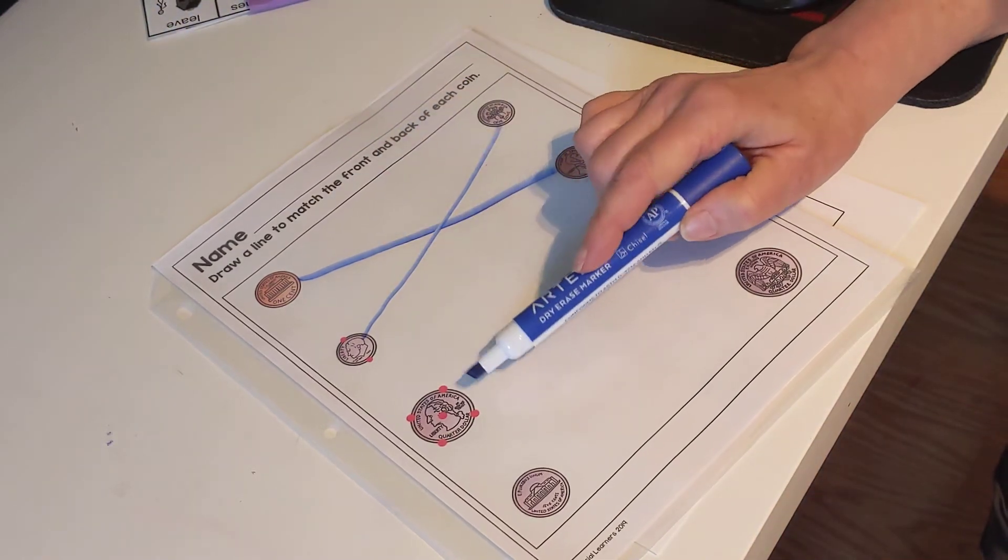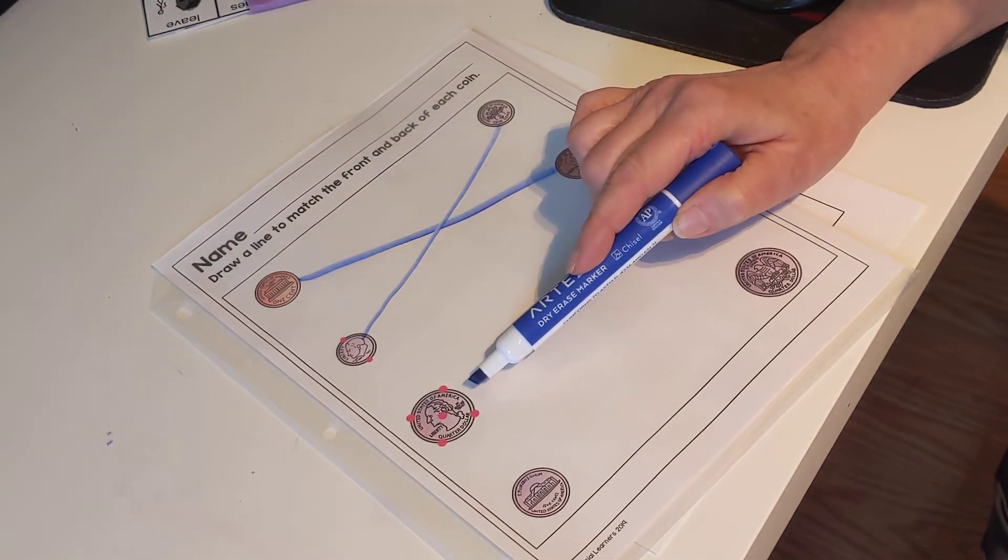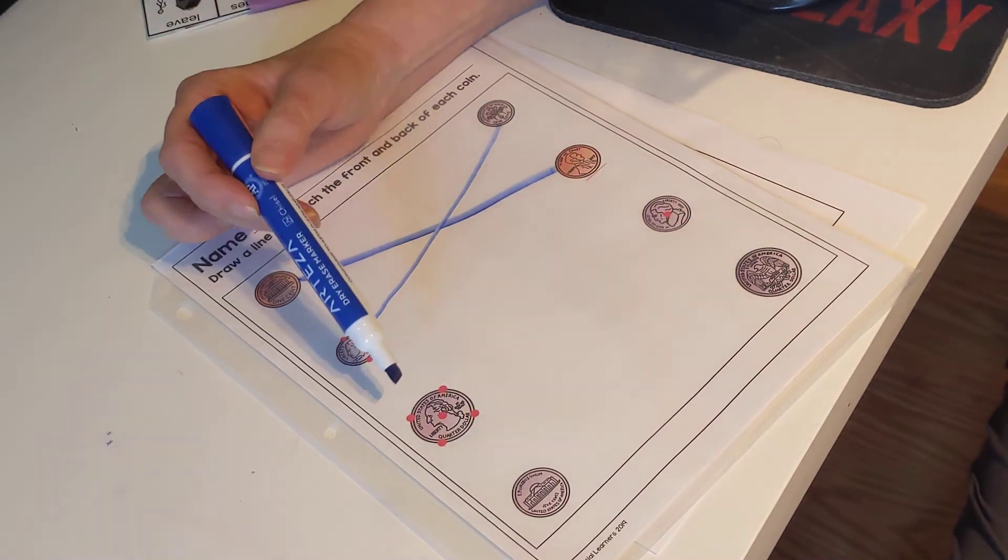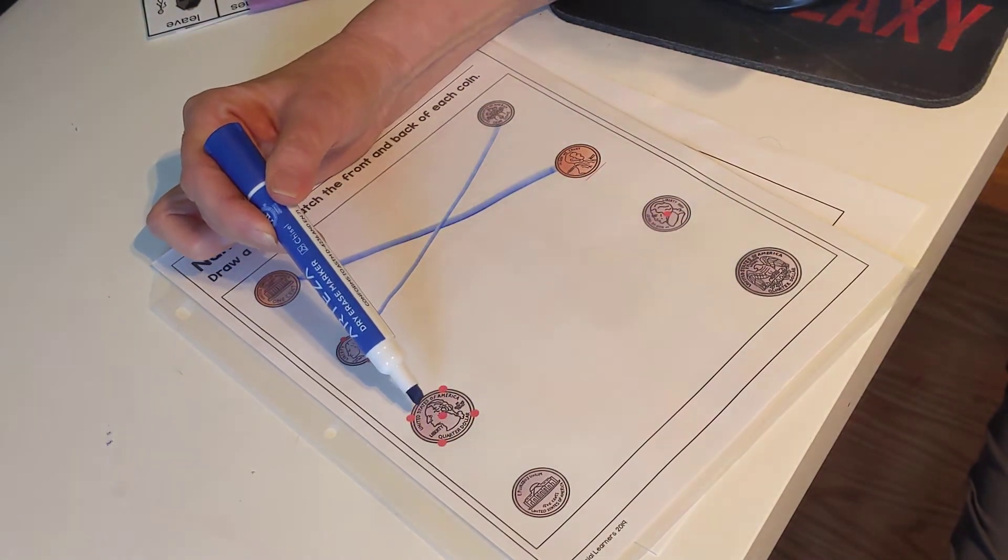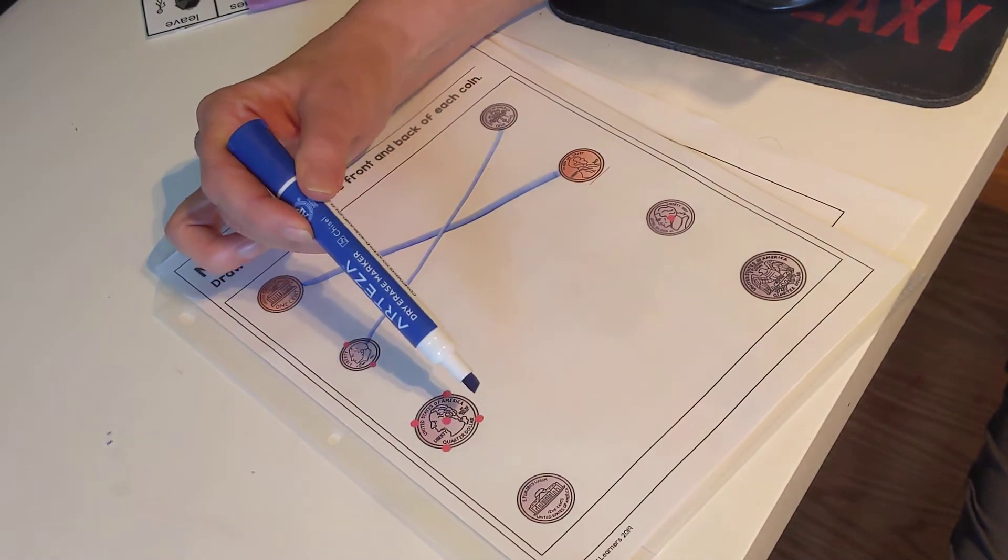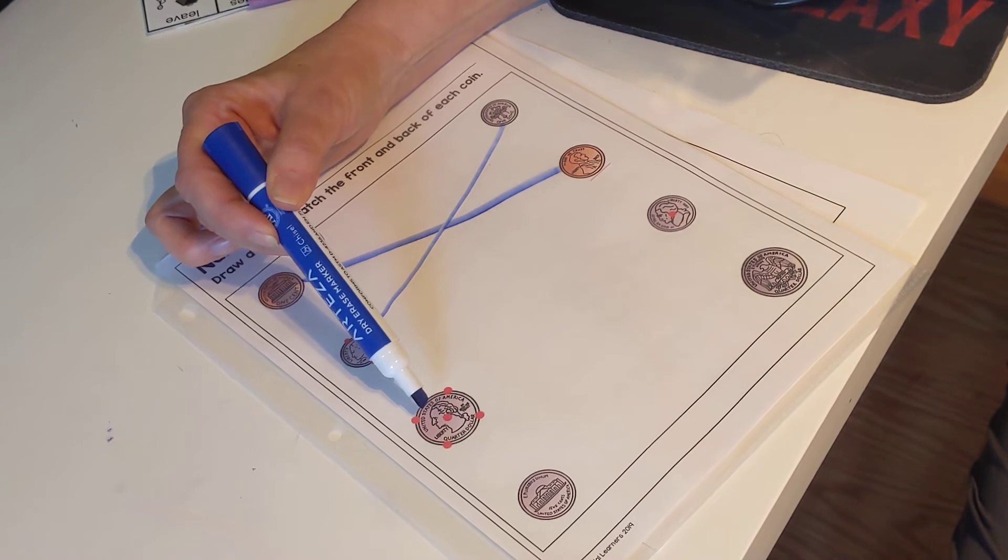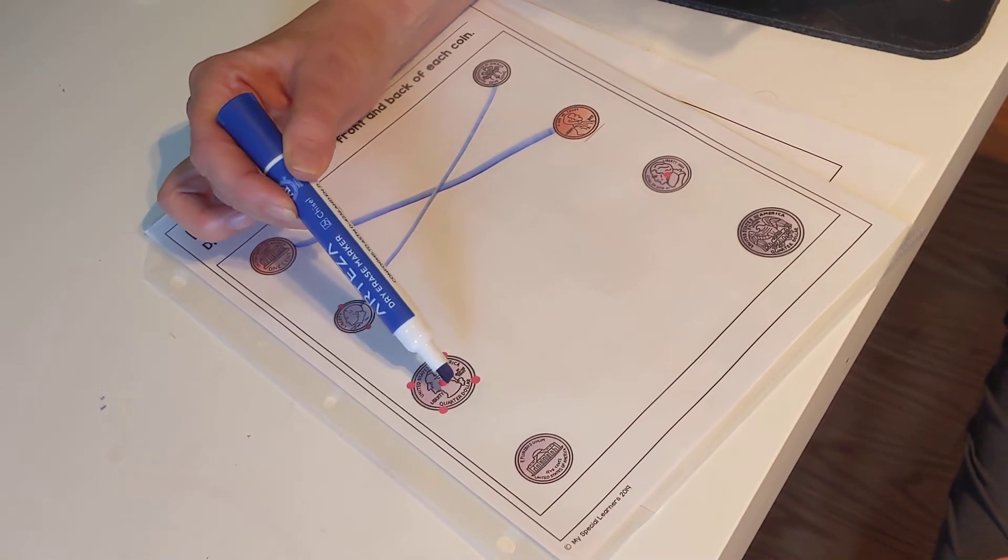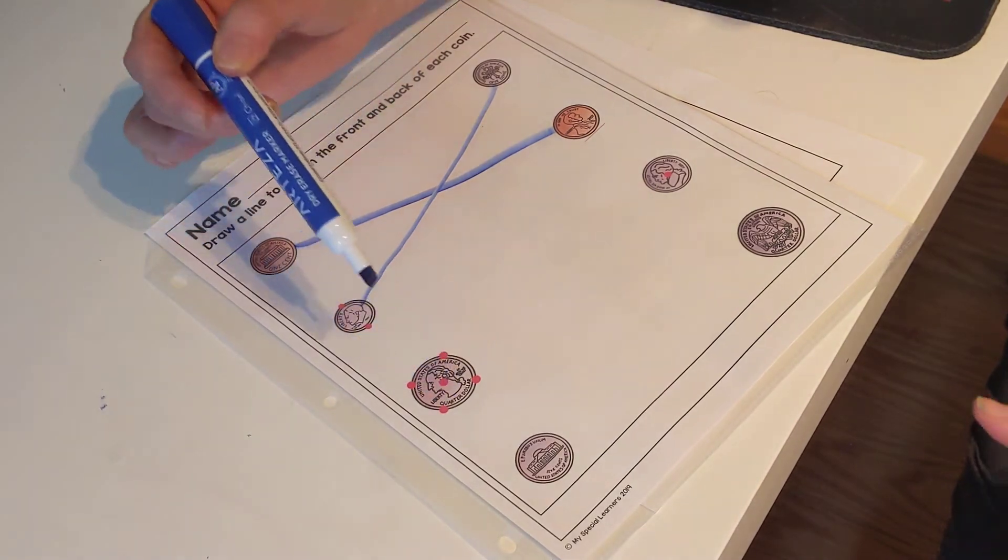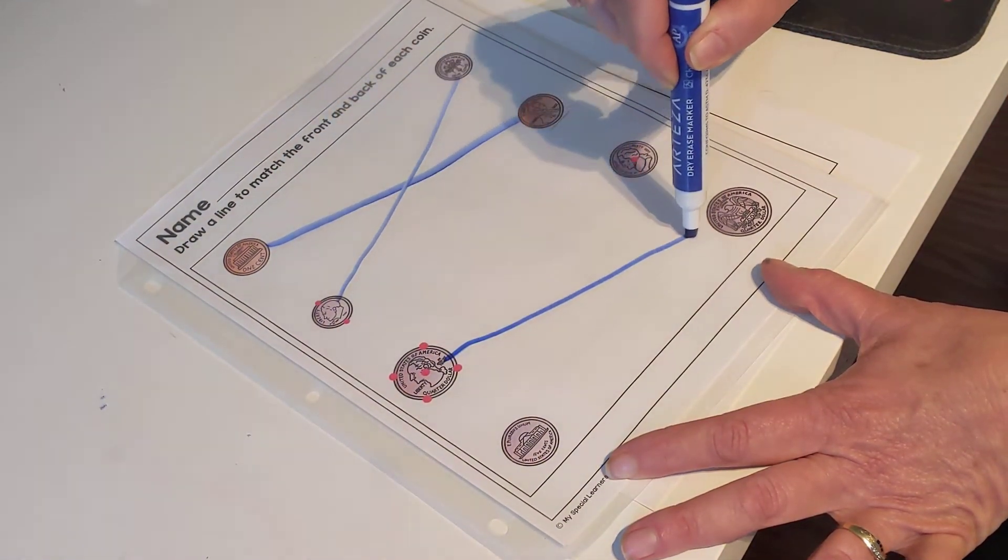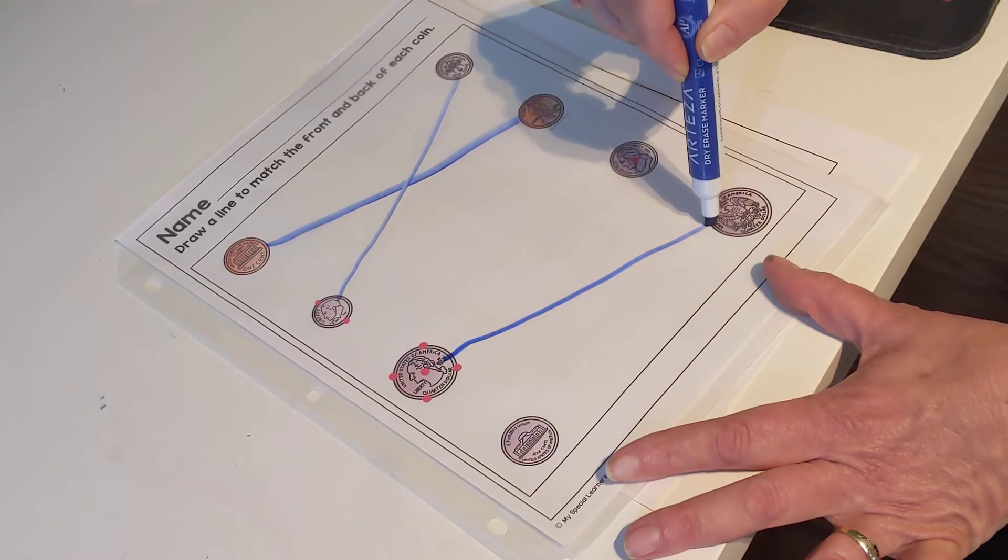And who remembers what this is? Quarter. This is a quarter and it's worth 25 cents. Let's count by fives. Five, ten, fifteen, twenty, twenty-five. Two touch points at the top. Touch point in the middle. Two touch points at the bottom. Let's draw the line. Excellent.